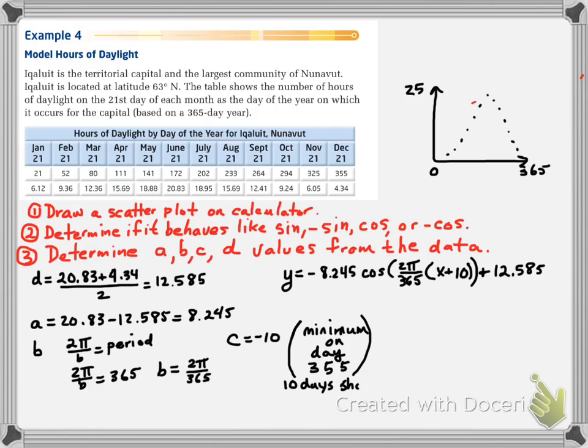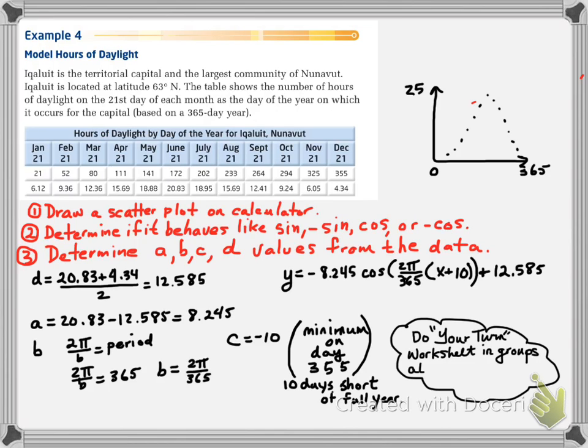Again, the minimum on day 355 is 10 days short of the full year. Your assignment is to do the U-turn worksheet in groups, and if you're finished that, you can go ahead and work on page 275, numbers 1 to 9.